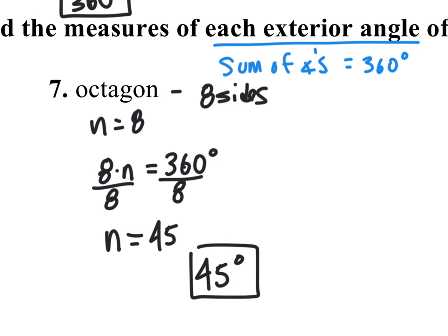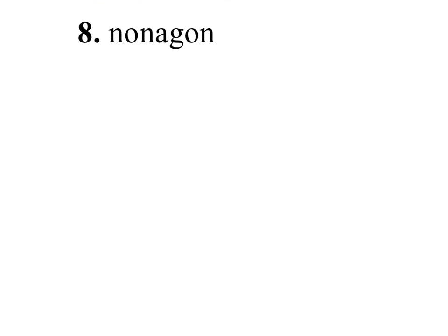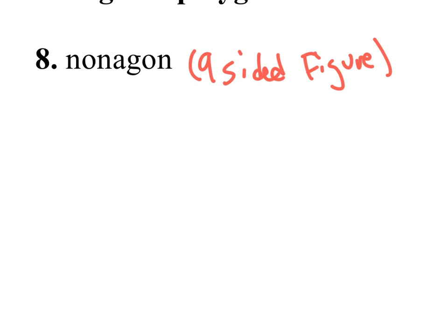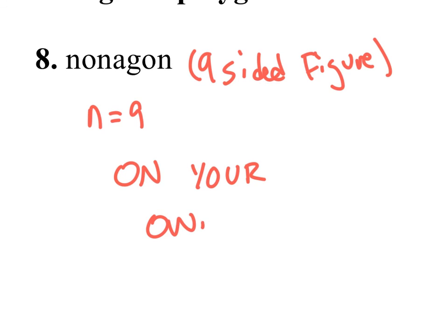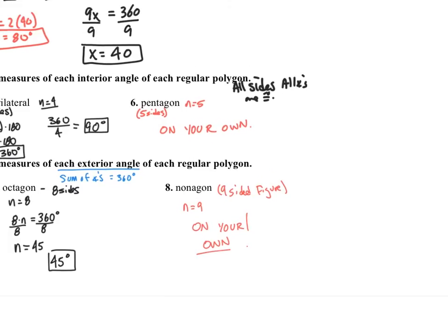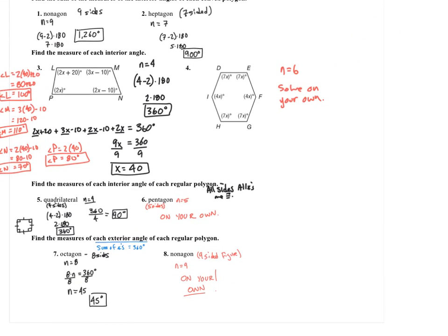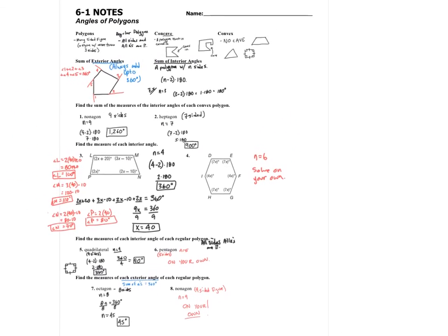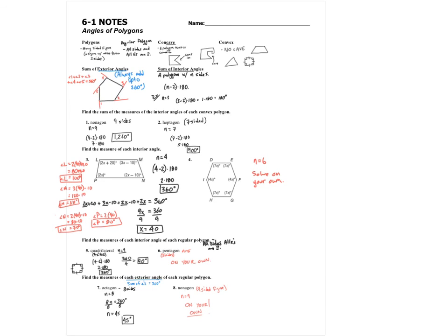Number 8 is a nonagon — a nine-sided figure — so n equals 9. I want you to answer this question on your own. So you've got three problems to do on your own: number 4, number 6, and number 8. Please have those done by class. These examples should help you with those. I hope you enjoyed this video on 6.1. Thank you, see you soon, bye.